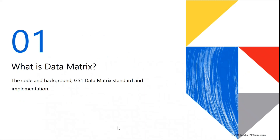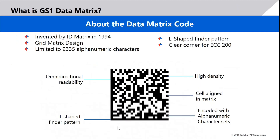So what is the Data Matrix code? The Data Matrix was invented in 1994 by a US company called International Data Matrix Inc, or ID Matrix. Data Matrix codes are usually square or sometimes rectangular in shape and are made up of multiple light and dark square dots or cells arranged in a grid or matrix. The number of rows and columns increases with the amount of information stored, limited to 2,335 alphanumeric characters.